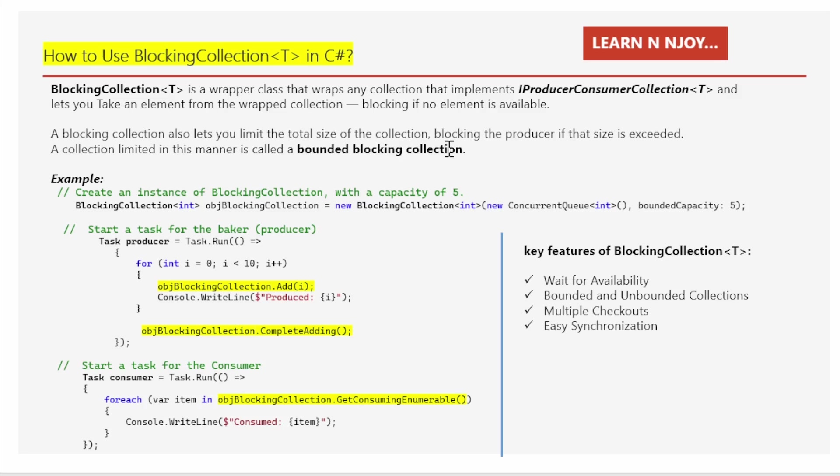Let's imagine a grocery store checkout. Think of a BlockingCollection<T> like a special kind of queue at a grocery store checkout. In a normal queue, when you go to the checkout line and there is no cashier available, you just stand there and wait. But what if there were no way to wait and you just had to leave if no one was ready to help you?